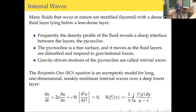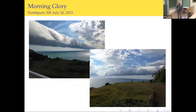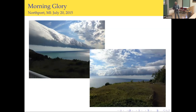One of the things that this equation and this physical phenomenon is supposed to describe is something called the morning glory cloud. This is one that appeared in Michigan where I live in 2015. You can see it's a long cloud that looks like a tube, and that tube is like a solitary wave — it's supposed to be a solitary wave of the Benjamin-Ono equation. Somehow it attracts some moisture, which is why you can see it.